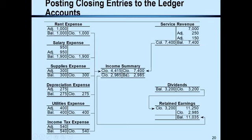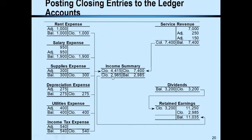The income summary account was built in the first entry and closed in the third closing entry. In the retained earnings account, the opening balance was added to by net income of $3,395 from the income summary closure, and then dividends of $3,200 were subtracted, resulting in a closing balance of $3,195 in retained earnings.